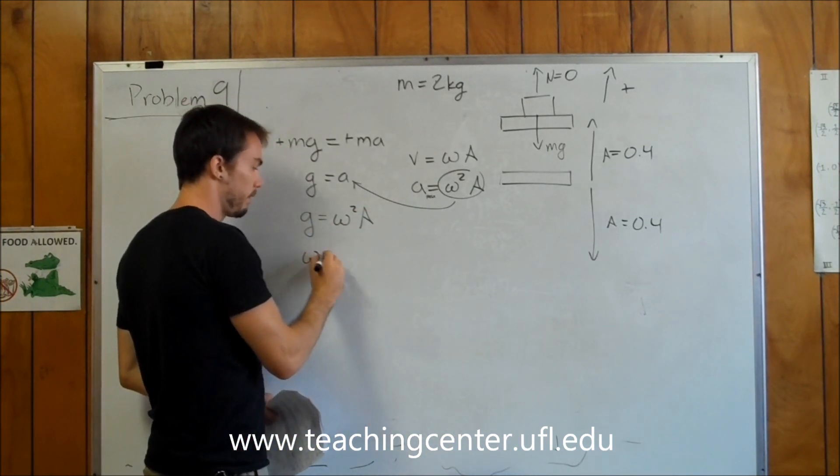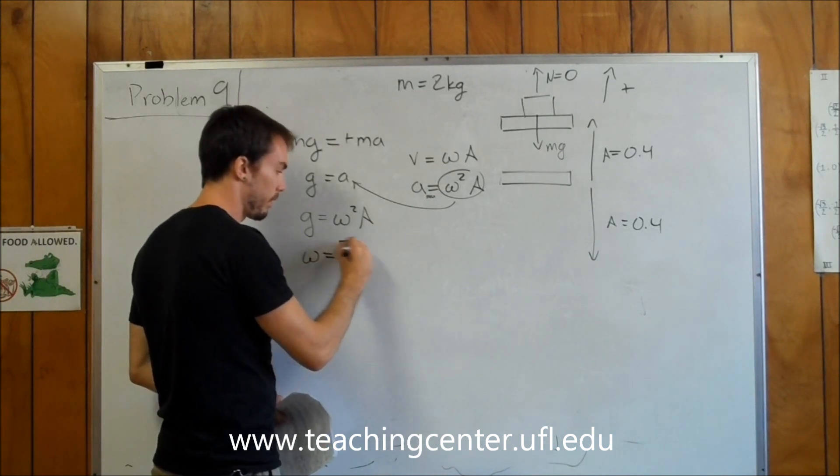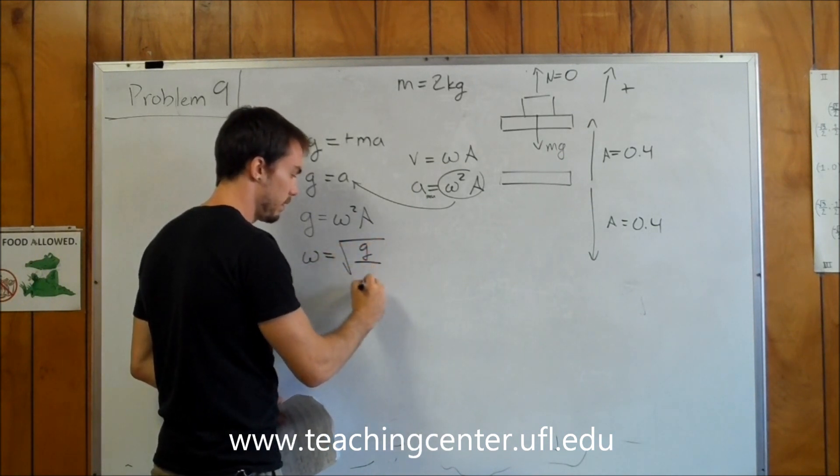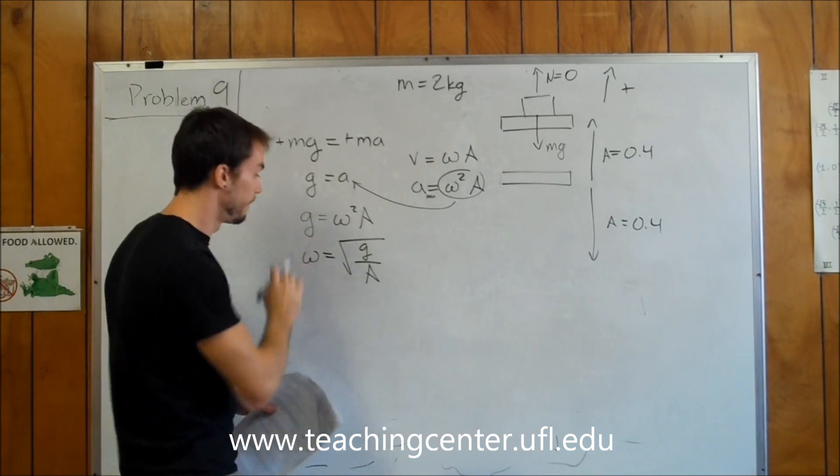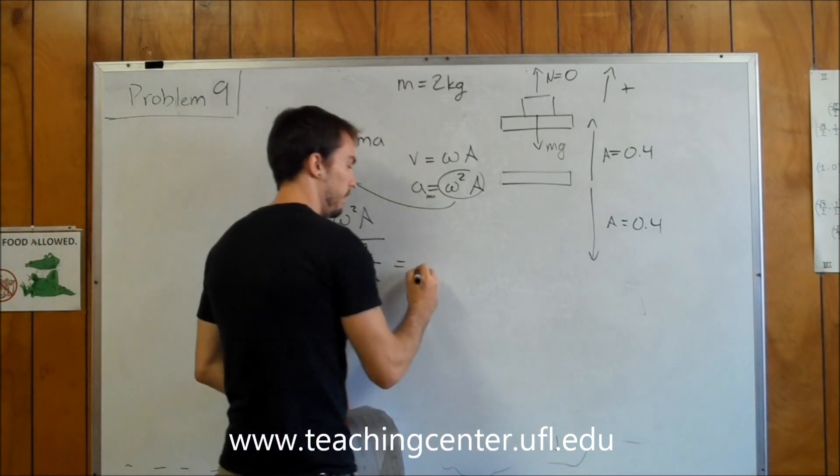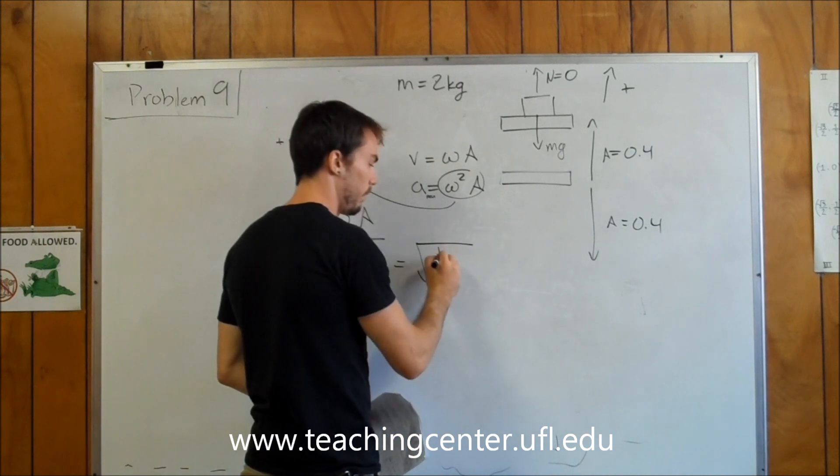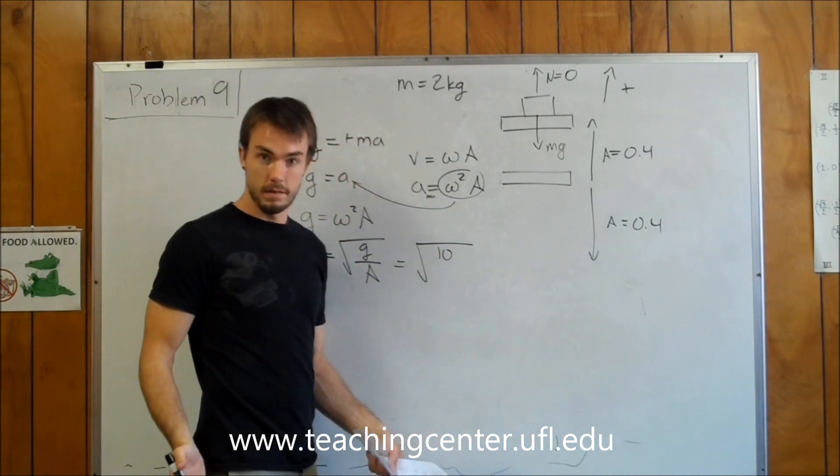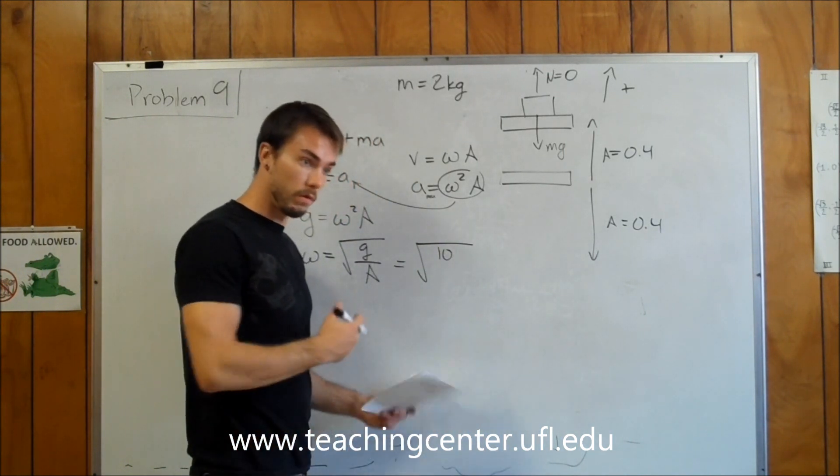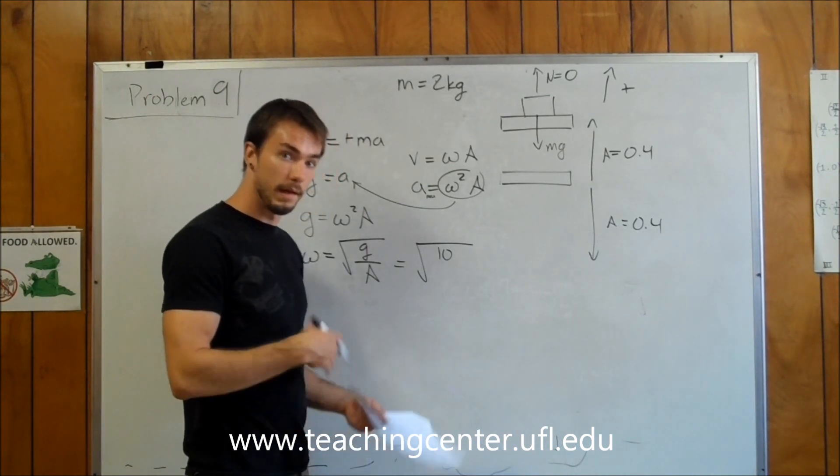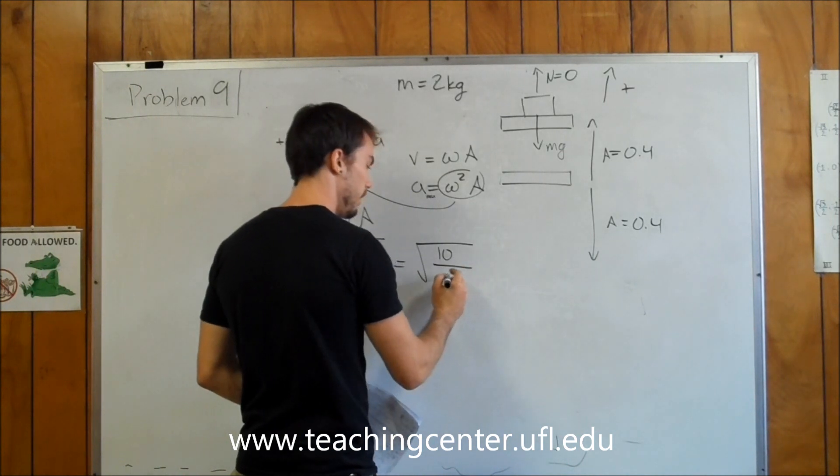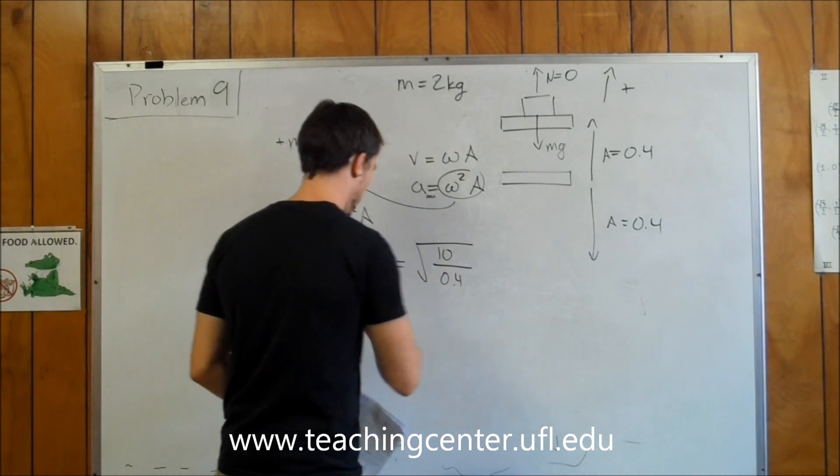With that in mind, we can just solve for omega by saying omega is going to be the square root of g over A, just by dividing your amplitude over and then taking the square root. Since we know what g is, once again, they used 10. If you use 9.8, that's perfectly fine. You're going to get an answer that's almost exactly the same, but they like to use 10 over our amplitude 0.4.